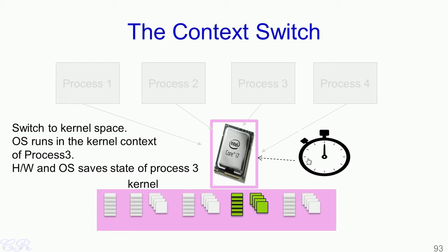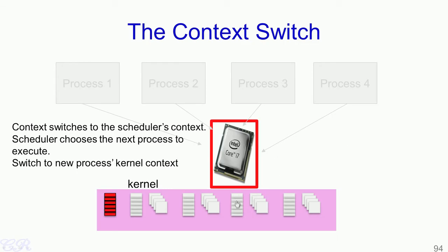The kernel determines the interrupt was due to the timer and invokes the scheduler. The scheduler switches from the kernel stack of the user process to its own scheduler stack, obtaining the scheduler context. It then chooses the next process from the ready list — in this case process 4 — and switches to process 4's kernel context, kernel stack, and page tables.